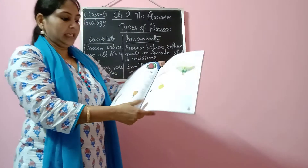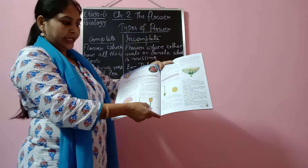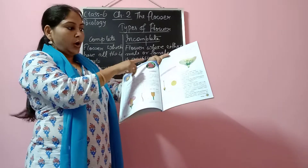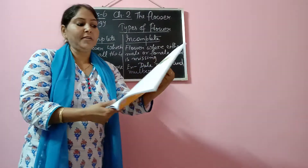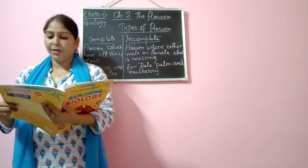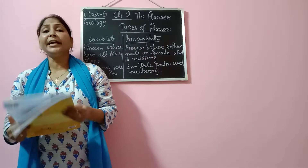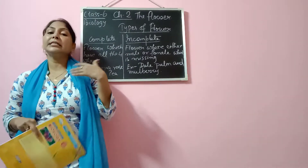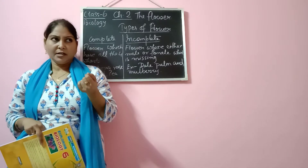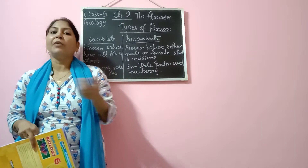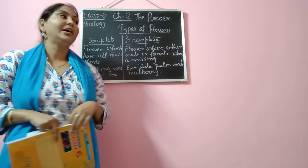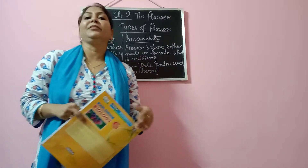Now, these things we covered yesterday — the parts of flower, all four whorls, and their functions. Today in this video, we are going to discuss about the next topic, that is the types of flower. There are basically different types of flowers. We are going to learn about the first type, that is complete and incomplete flower.